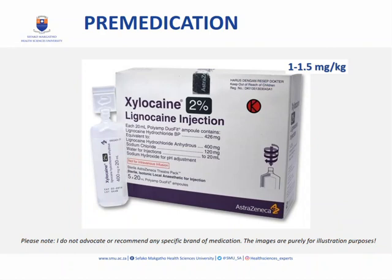Another drug used before induction is lignocaine, for two reasons. First, a small dose of about 40 mg (2 ml) can numb the blood vessel by occluding the vein after injection, so that medications given later — like propofol, etomidate, or rocuronium — will not burn as much. Second, a larger dose of 1 to 1.5 mg per kg will also help to blunt the intubation response. This can be very useful for patients where you can't use opioids, for example pregnant patients.